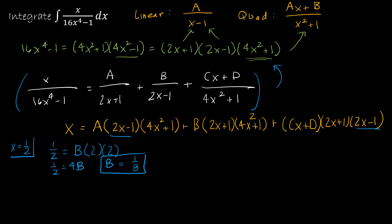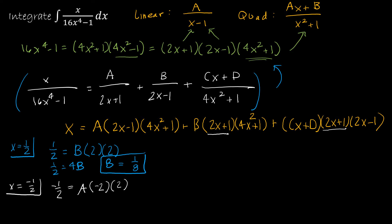Now I'll let x equal negative 1/2, which makes 2x + 1 = 0, eliminating the B and (Cx + D) terms. So negative 1/2 equals A times (2·(−1/2) − 1)(4·(1/4) + 1) = A times (−2)(2) = −4A. Therefore negative 1/2 = −4A, which gives A = positive 1/8.